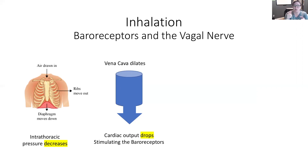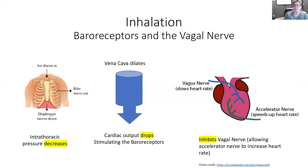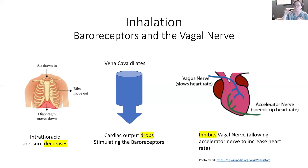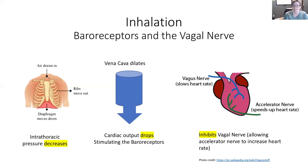This is where the baroreceptors signal that we need support. They're going to inhibit the vagal nerve — we don't need the heart rate to go slower because we're already struggling with cardiac output; we actually need it to go higher. So the vagal nerve will be inhibited to allow the heart rate to increase. With inhalation, we generally have an increase in heart rate because the vagal nerve is inhibited as a result of cardiac output dropping.